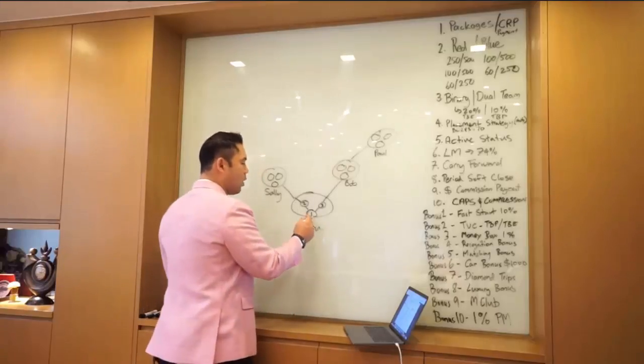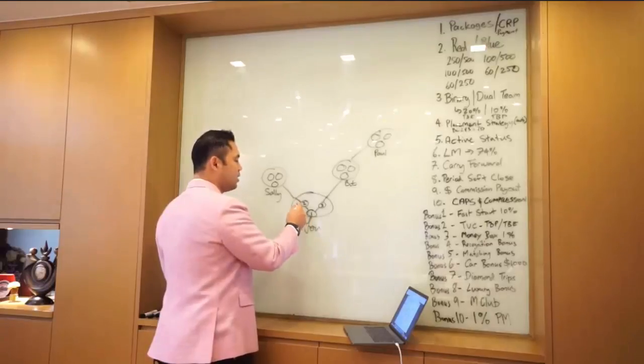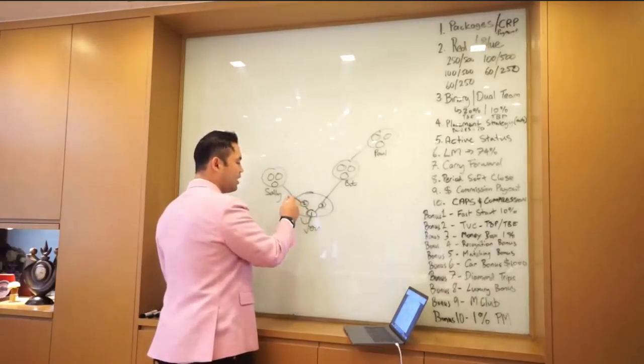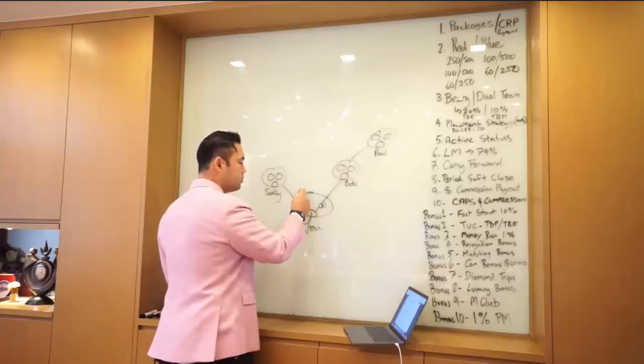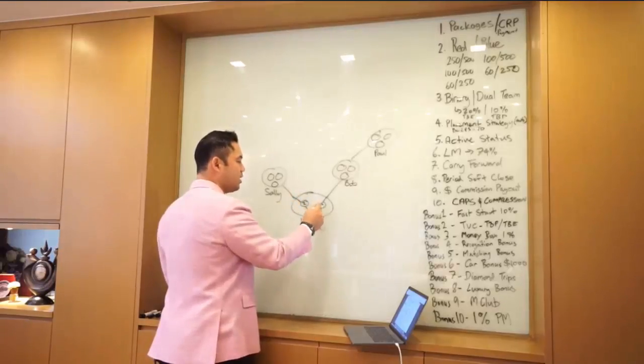If you look at business center one, is there volume on the left? Yes. Volume on the right? Yes, there is. If you look at business center two, is there volume on the left? Yes. Volume on the right? No. Look at business center three, volume on the right? Yes. On the left? No.